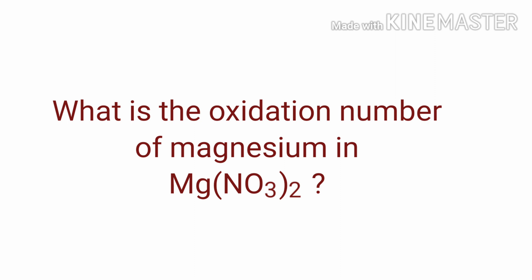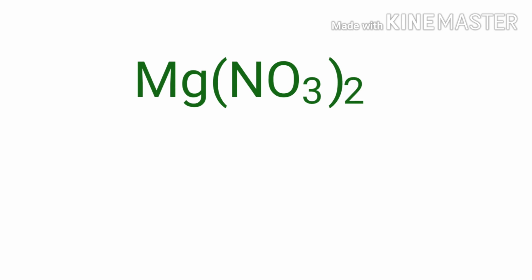What is the oxidation state of magnesium in magnesium nitrate? Magnesium nitrate is a neutral compound with overall oxidation number zero. Therefore, we know that the sum of oxidation numbers of the atoms is equal to zero.